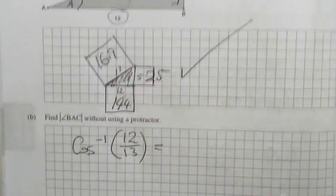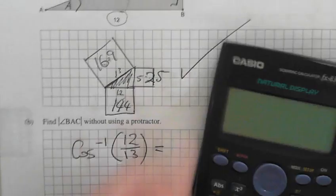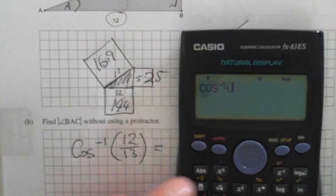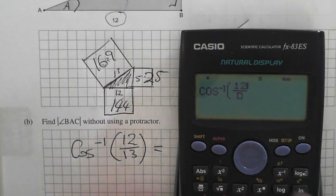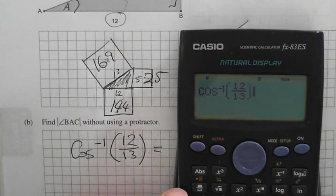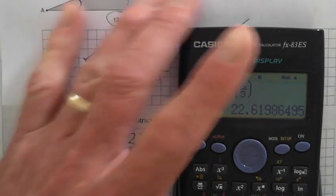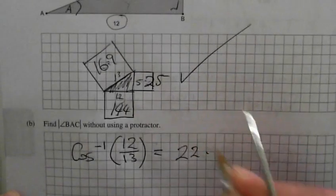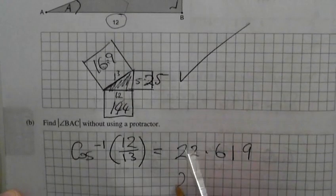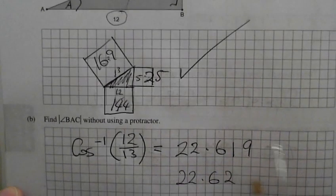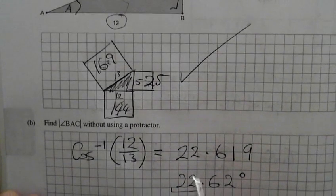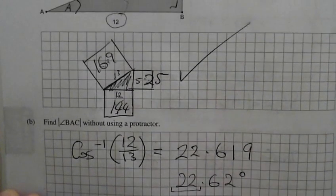So with your calculator you go cos, or sorry, shift second function, cos fraction 12 over 13, close the bracket, equals 22.619. 22.619 or 22.62 degrees, or if they want it as just a whole number, it's going to be 23 degrees.